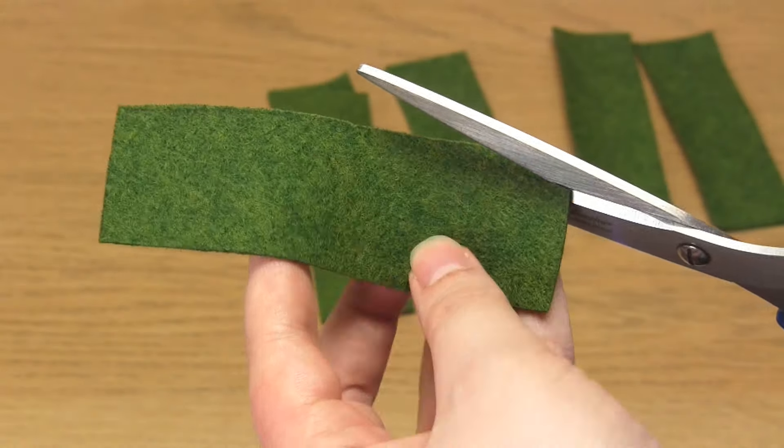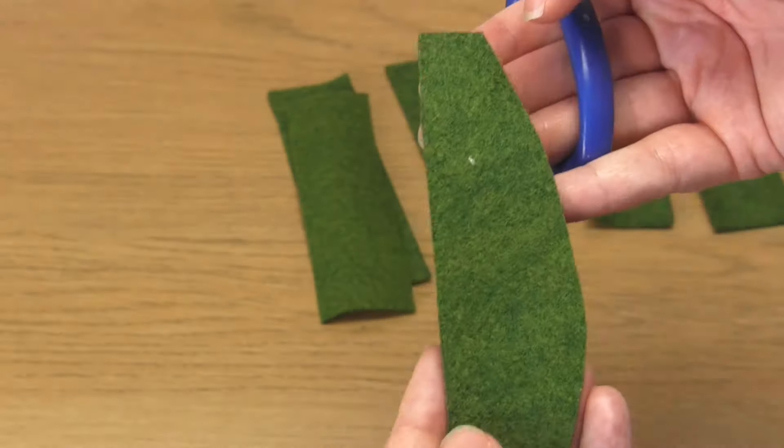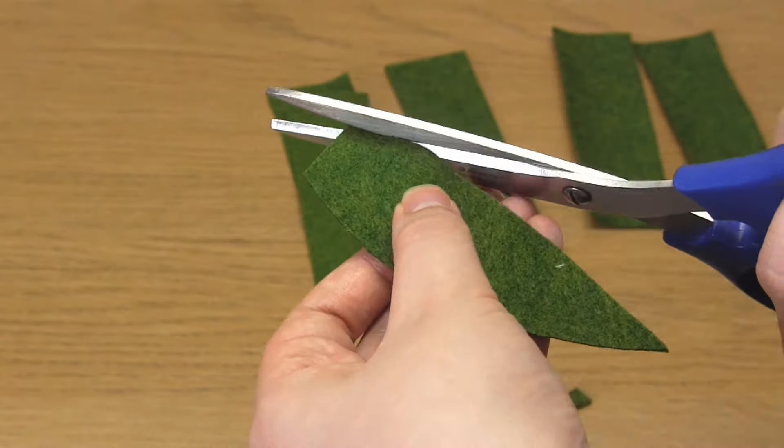You'll need to cut each of these rectangles into a bottom-heavy leaf shape, with a straight edge at the base, like so.